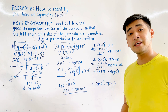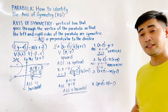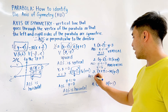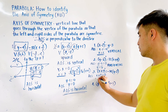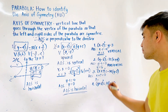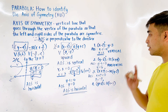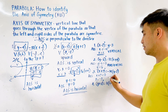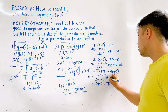For exercise 3, we are given (x + 7)² = −14(y − 2). Therefore our AOS: x + 7 = 0, so x = −7. If x = −7, the axis of symmetry is vertical.